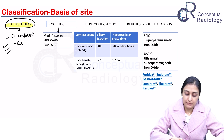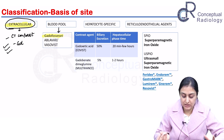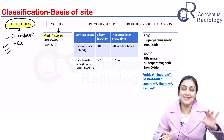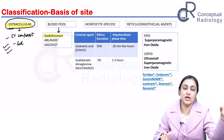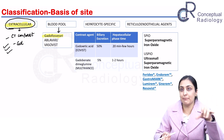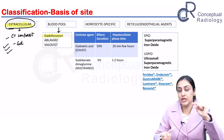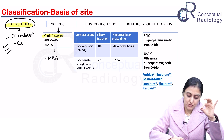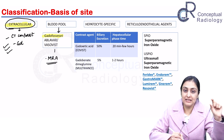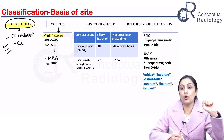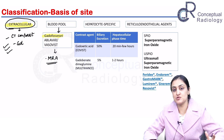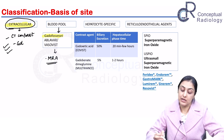A special blood pool contrast agent is gadofosveset, sold under the names Ablavar and Vasovist, though it is not routinely used now. It stays within the blood pool because it binds very tightly to albumin and does not cross into the interstitium. This gives very good angiography images with prolonged arterial and venous phases, making it highly suitable for MR angiography.